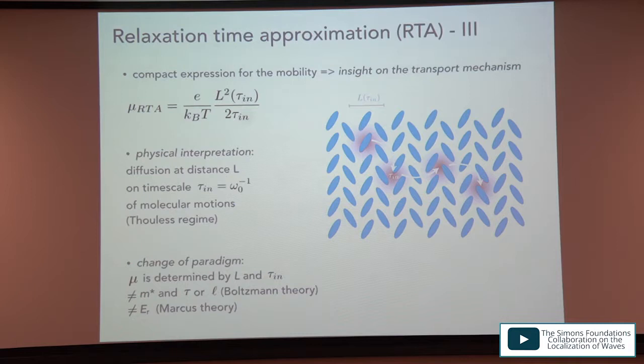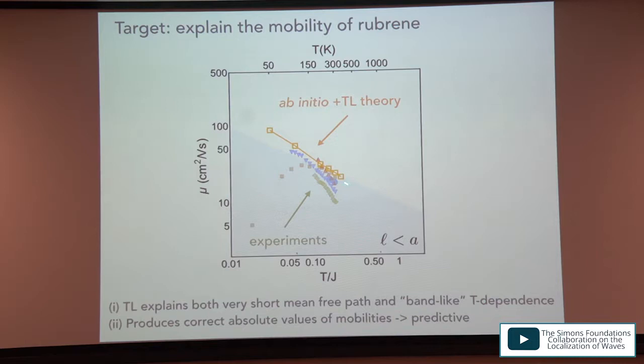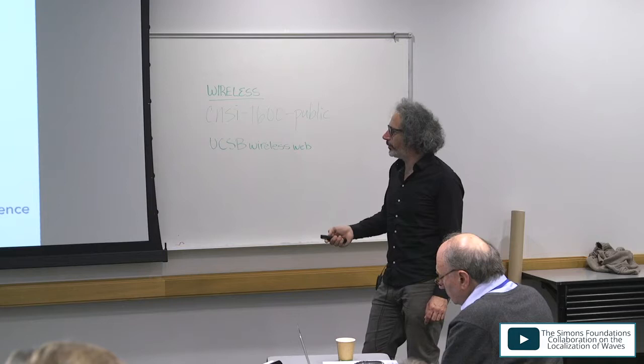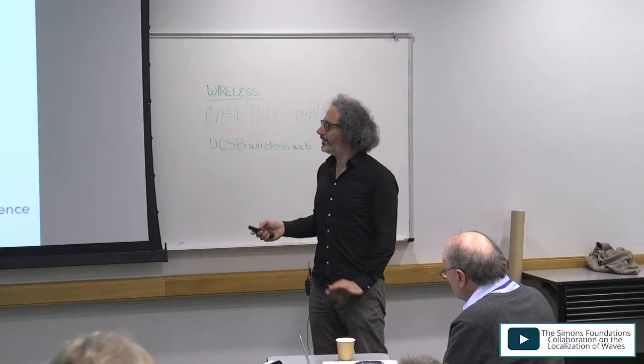Applying the theory to rubrene using ab initio parameters gives an upper bound to mobility with the correct power-law temperature dependence, compatible with short mean free paths. Phonons enter through both the molecular time scale τ and the amount of molecular disorder felt by carriers.